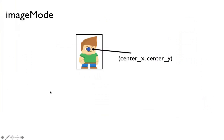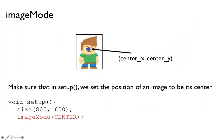One thing I want to point out is that by default the position of an image is the top left corner of the image. To make things easy, we're going to set the position of an image to be the center of the image. To do this, in setup we need to use imageMode and pass CENTER. That way the position of a sprite's image will be the center and not the top left corner.